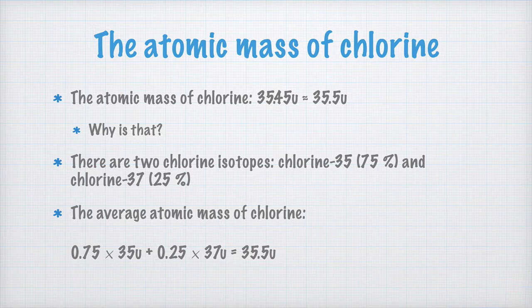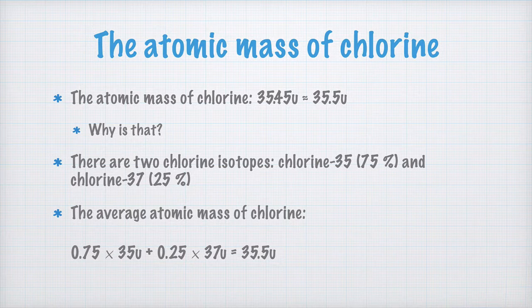So with this, I hope you've understood that the atomic number is the same as the number of protons in the nucleus, and that the mass number is equal to the number of protons plus the number of neutrons in the nucleus. And finally, the atomic mass is the average mass of the atoms of a certain element, written with the unit U — or Dalton, if you're a biochemist.